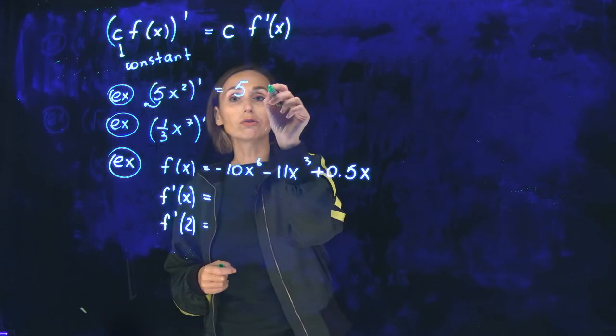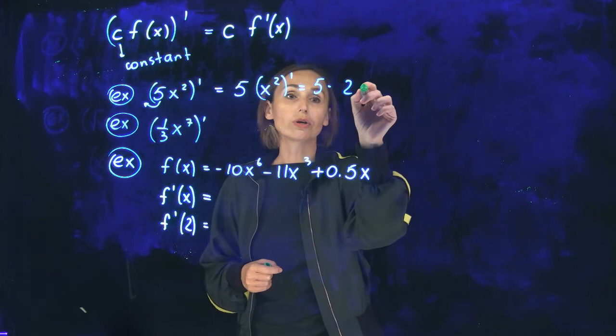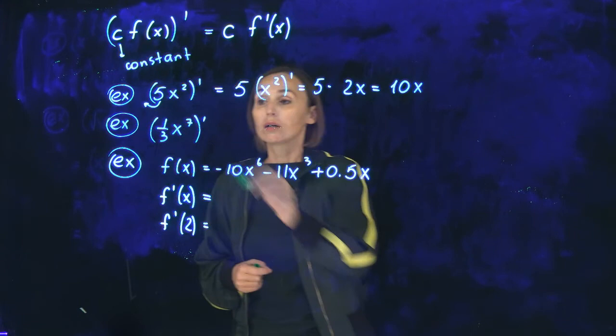Now here I have constant 5, write it outside and you need to differentiate x squared only. Derivative of x squared is 2x, so altogether you will get 10x.